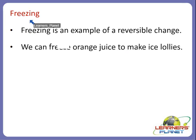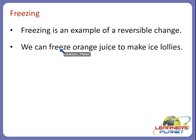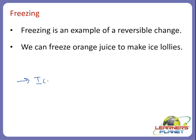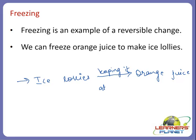The second process is freezing. Freezing is also an example of a reversible change. We can freeze orange juice to make ice lollies, and ice lollies can also be changed back to orange juice. If we keep them at room temperature, after some time, we can observe that we have obtained orange juice from them. So this is also a kind of reversible change.